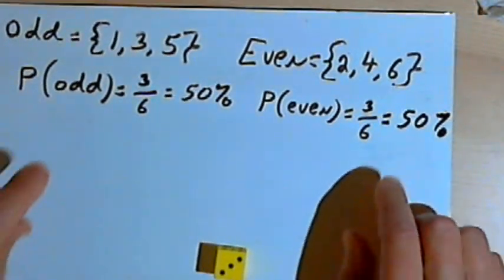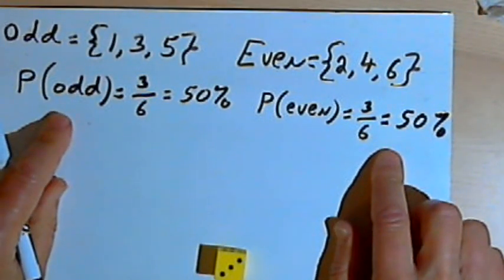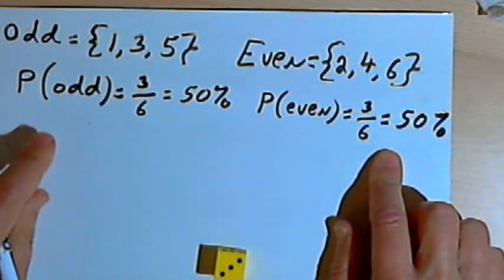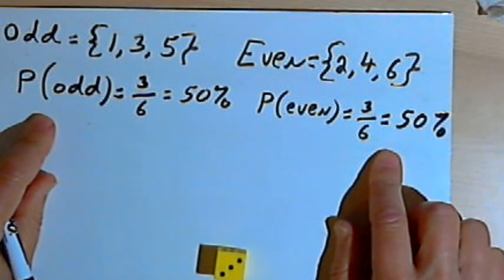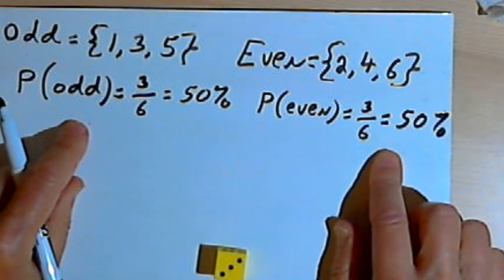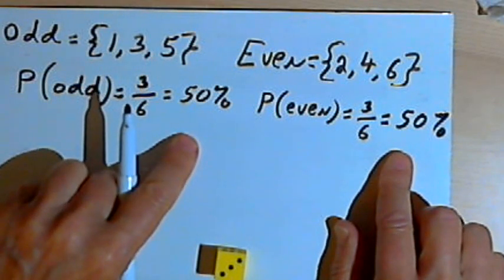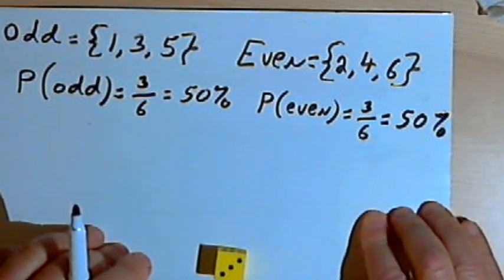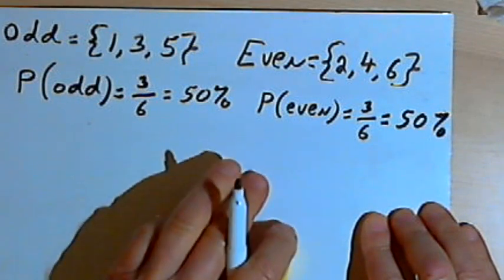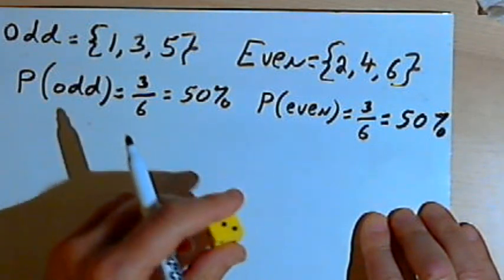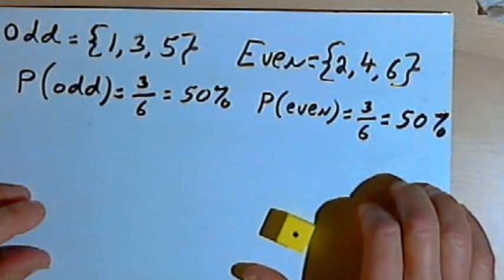Now these are what we call theoretical probabilities. I didn't throw the die, I didn't actually perform the experiment, I just figured out theoretically what the result should be. Now I could also figure this out by actually doing the experiment a large number of times. I could throw the die over and over again, thousands of times maybe.